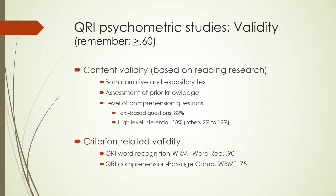For criterion-related validity, the QRI was correlated with the Reading Mastery word recognition test, and a validity coefficient of .90 indicates a high level of correlation with a well-established norm reference test. The QRI passage comprehension was correlated with the Reading Mastery passage comprehension subtest with a validity coefficient of .75. So overall, the QRI-5 has demonstrated very strong psychometric qualities for both reliability and validity.